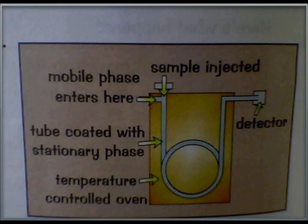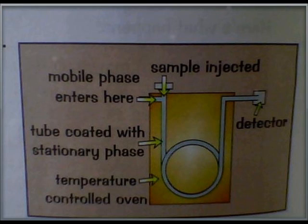There's also gas chromatography. The mobile phase is an unreactive gas, like nitrogen, and the stationary phase is a viscous liquid, like oil. The method: 1. The mixture is injected into a long tube coated on the inside with the stationary phase. 2. The mixture moves along the tube with the mobile phase until it comes out at the other end. 3. The time it takes the chemical to travel through is called retention time.